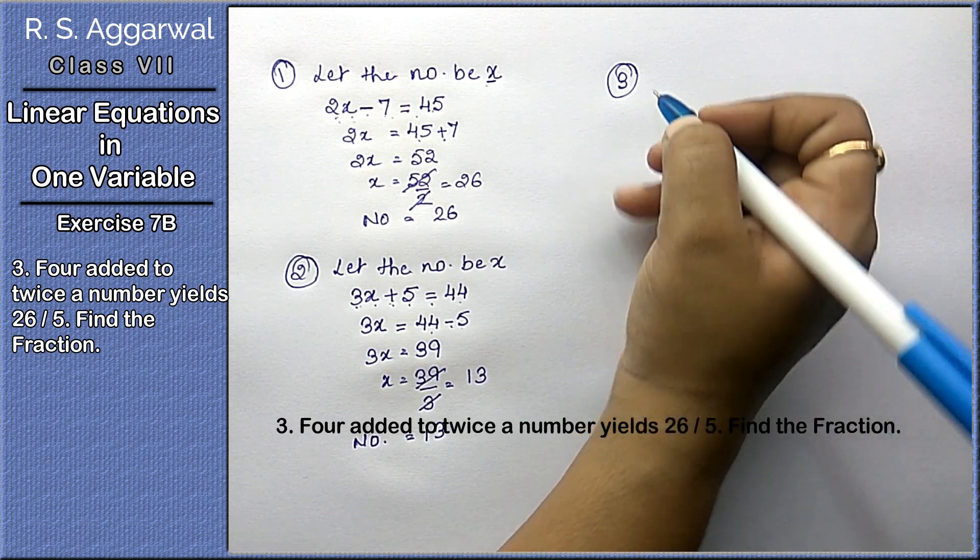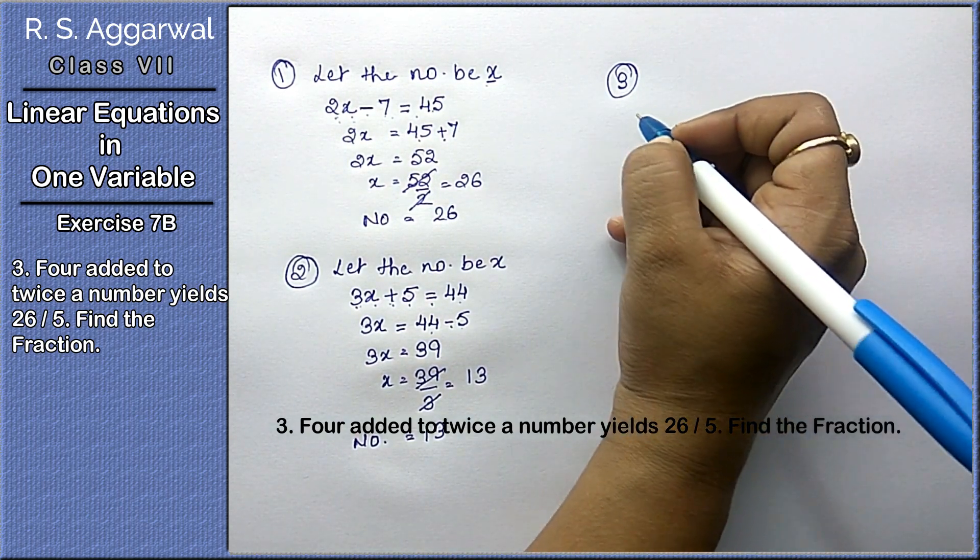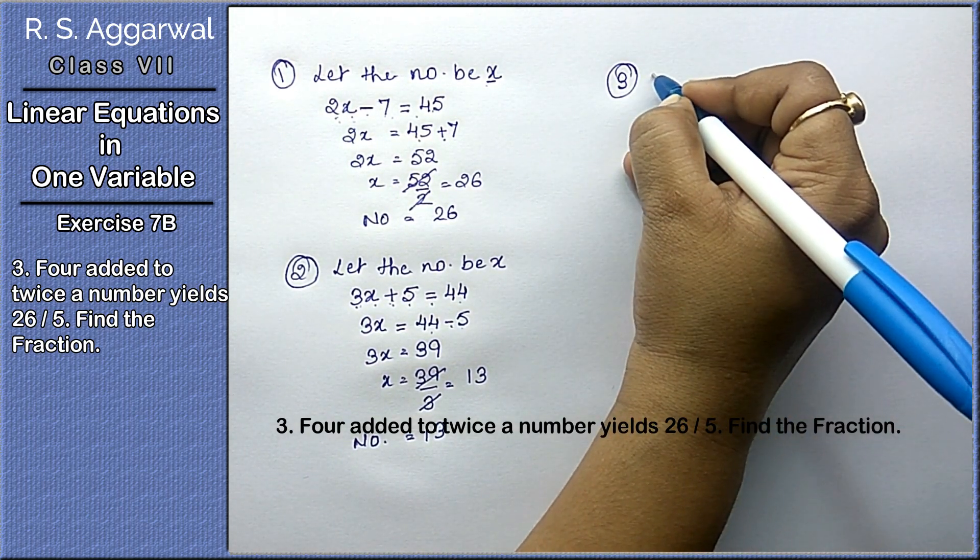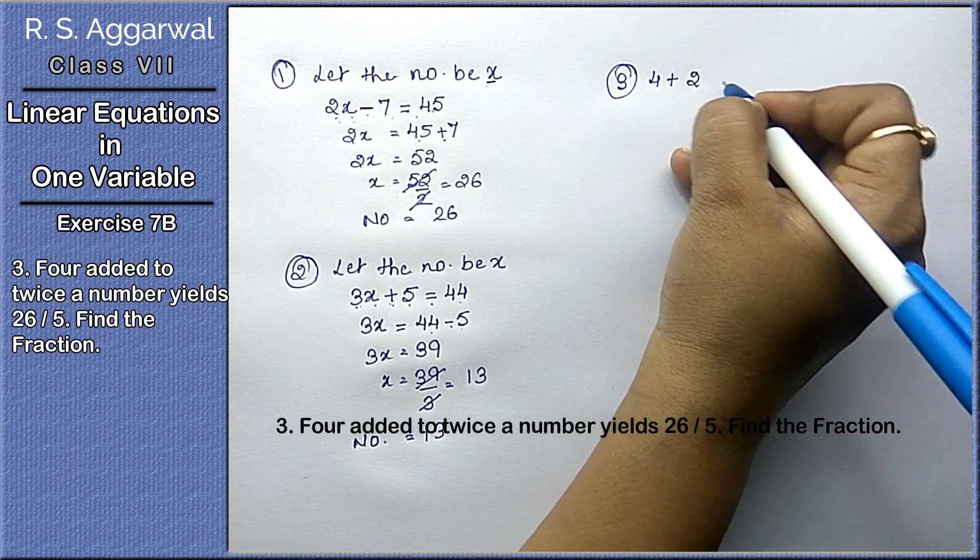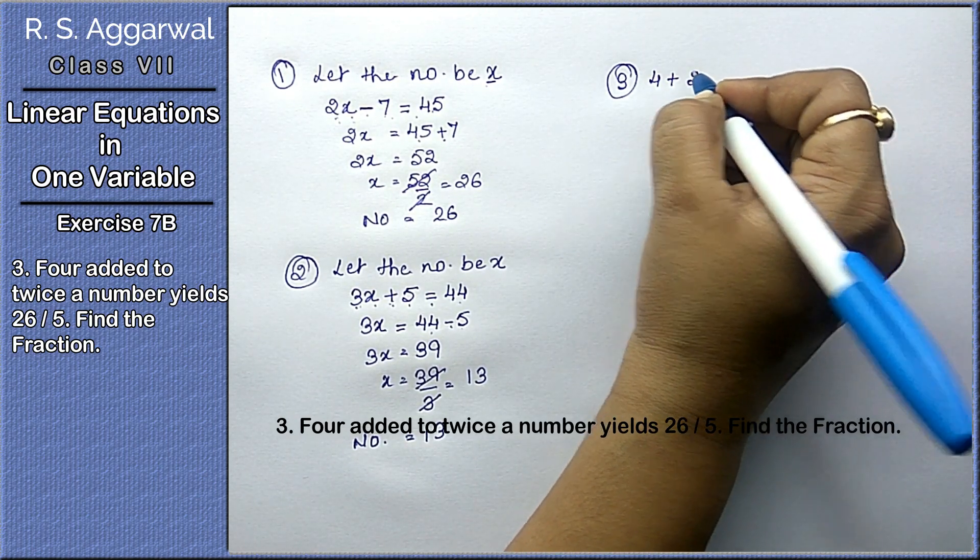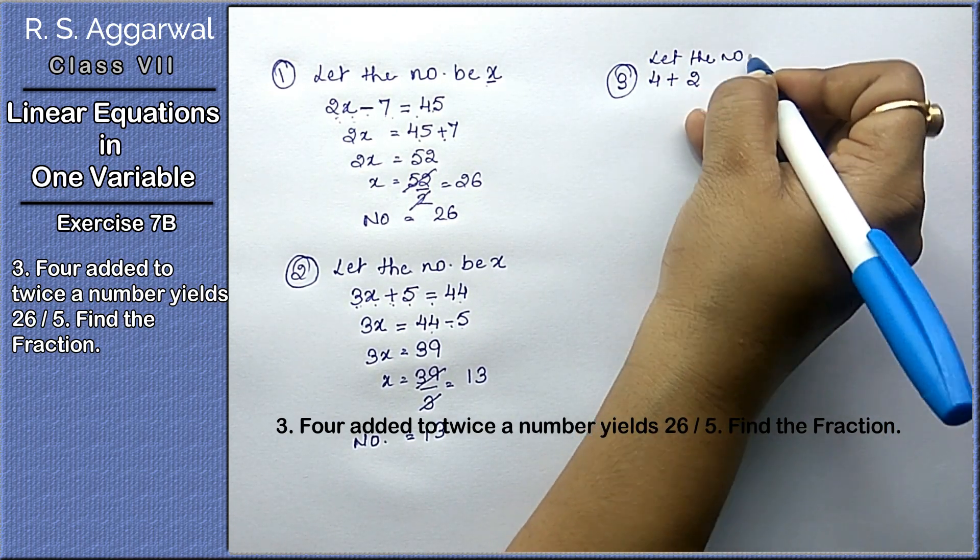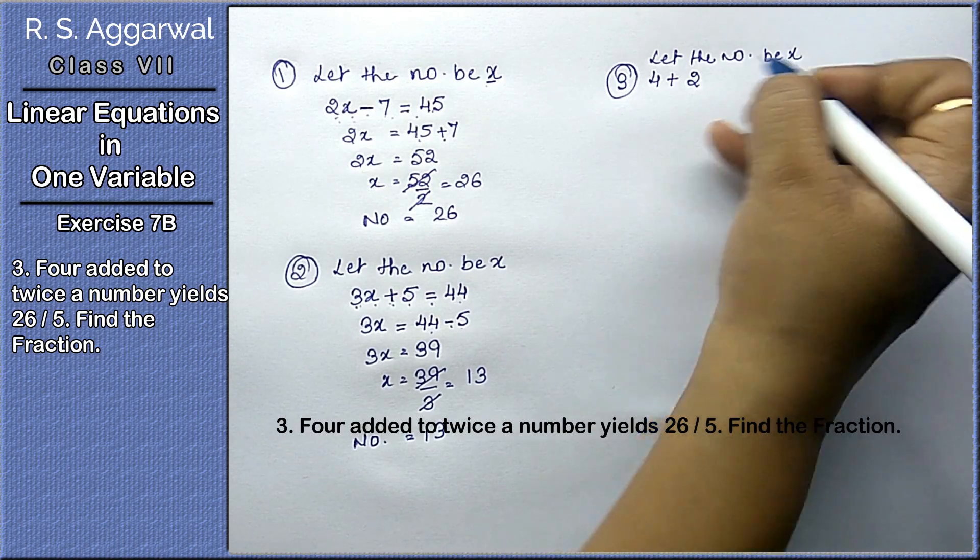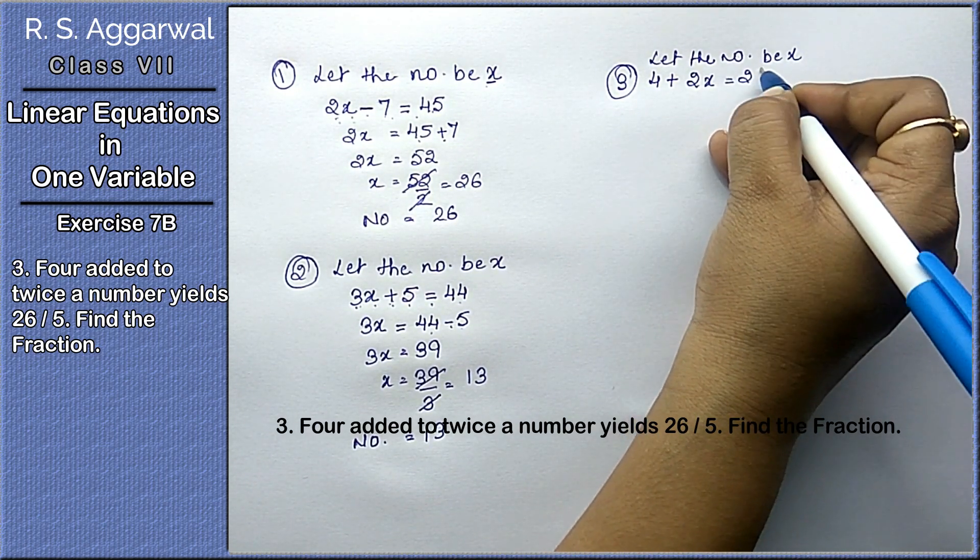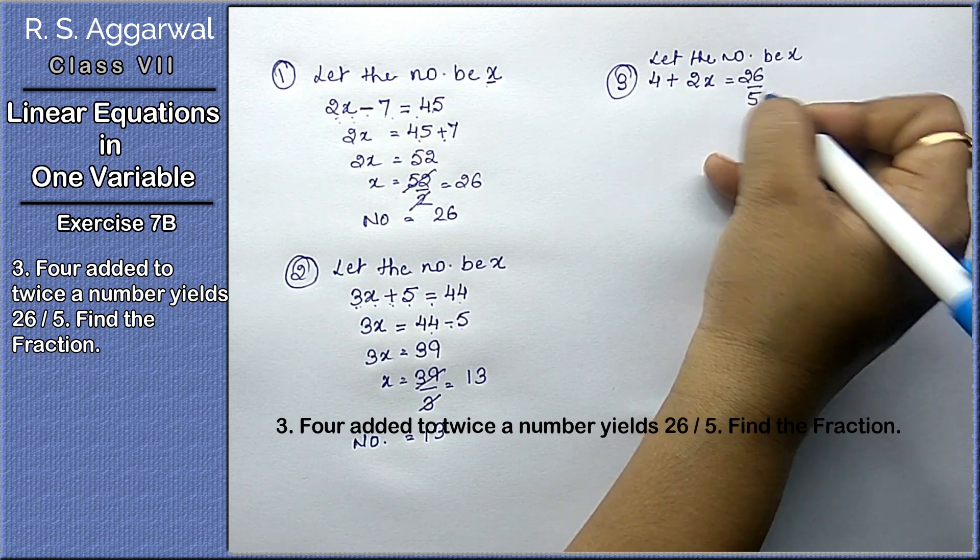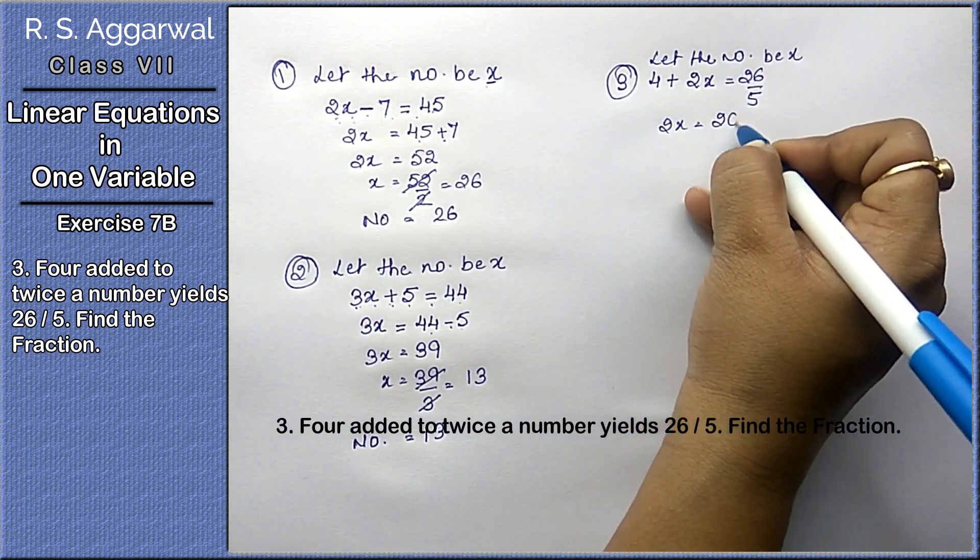Let's do the third part. 4 added to twice a number yields 26 upon 5, find the fraction. 4 added to twice a number. The number we will let be x.